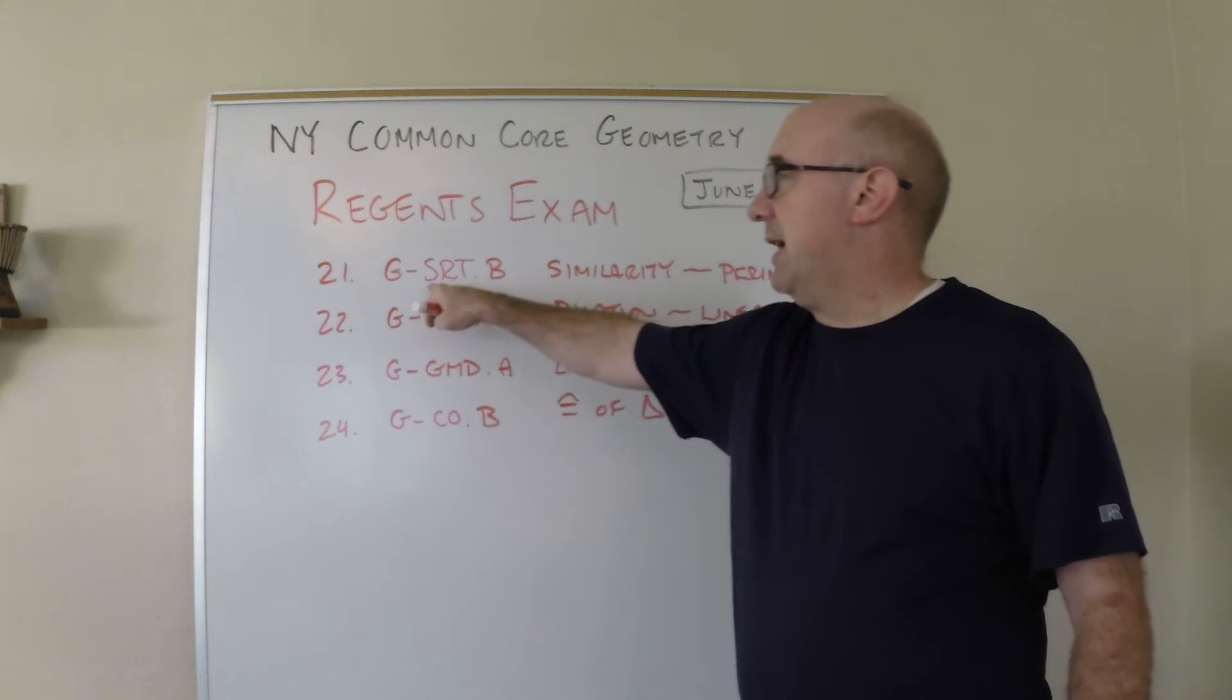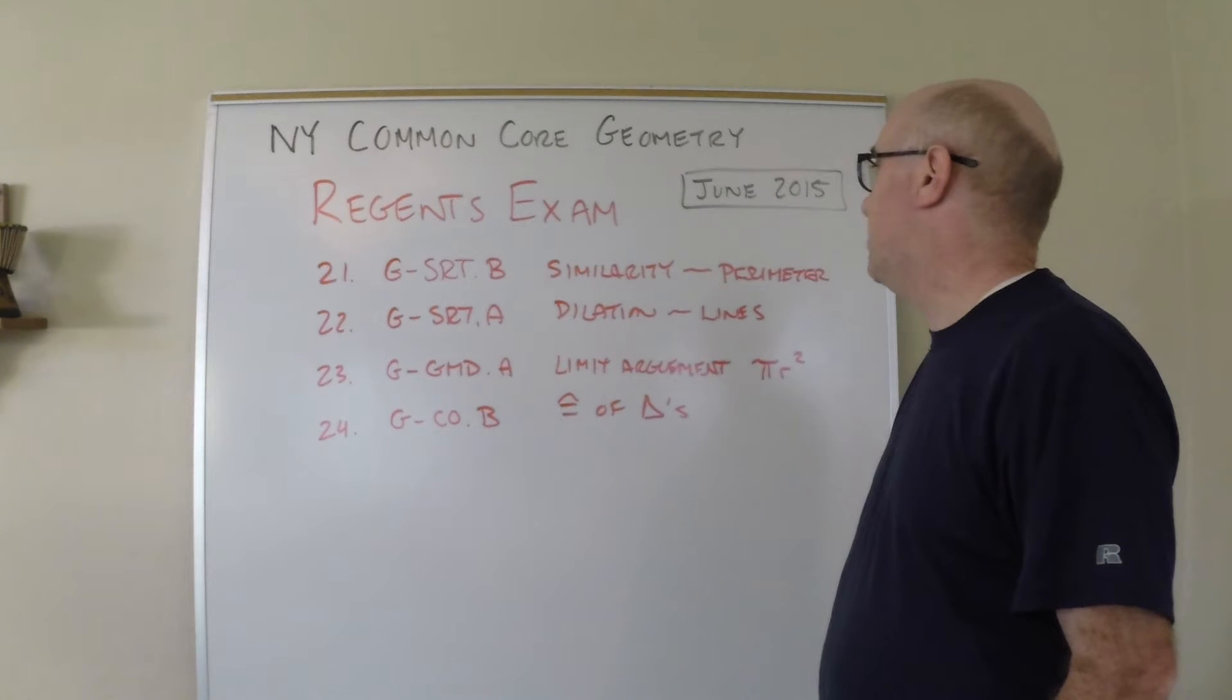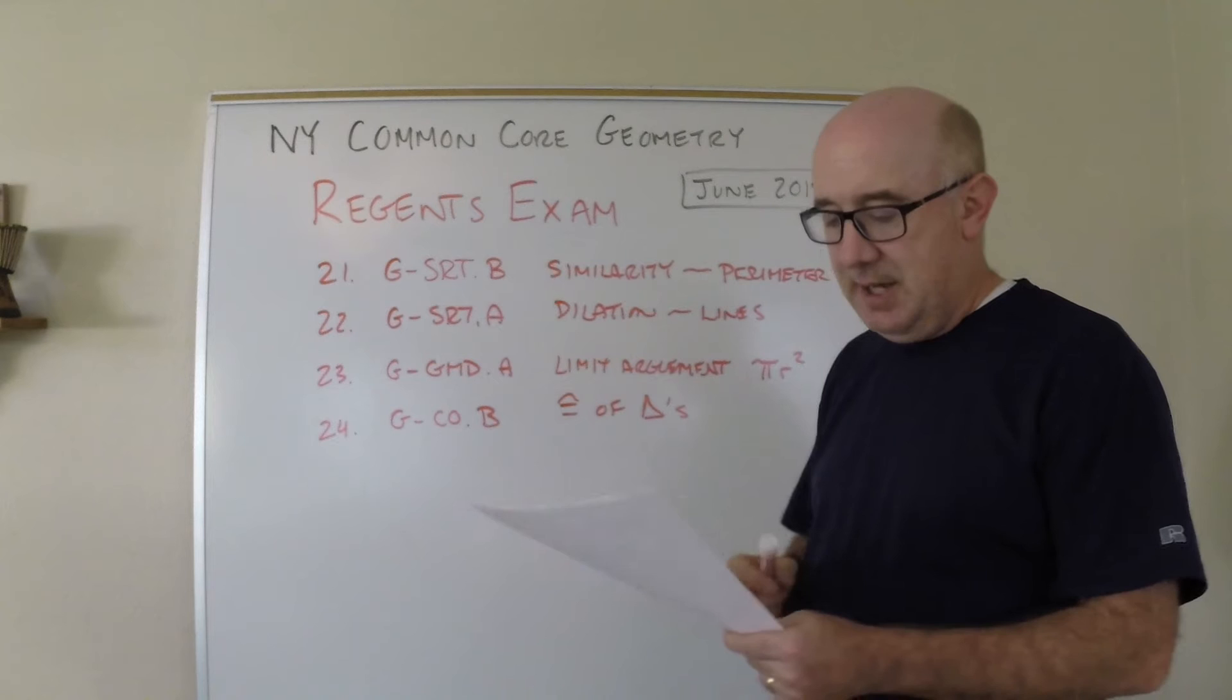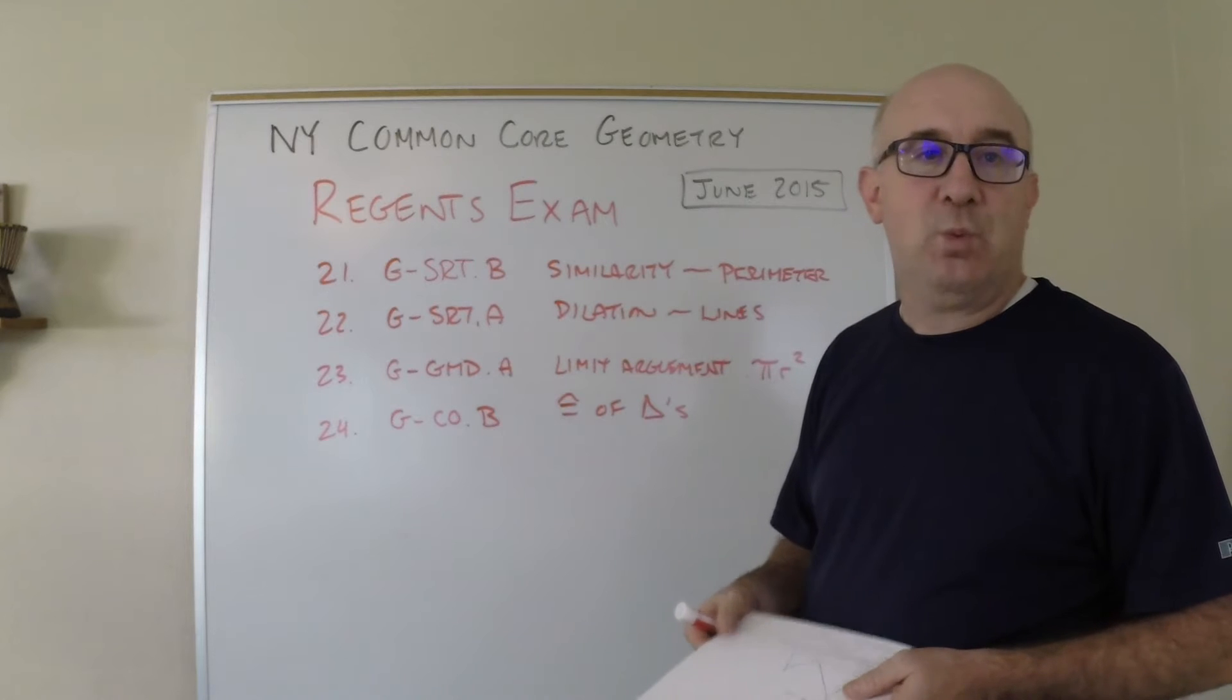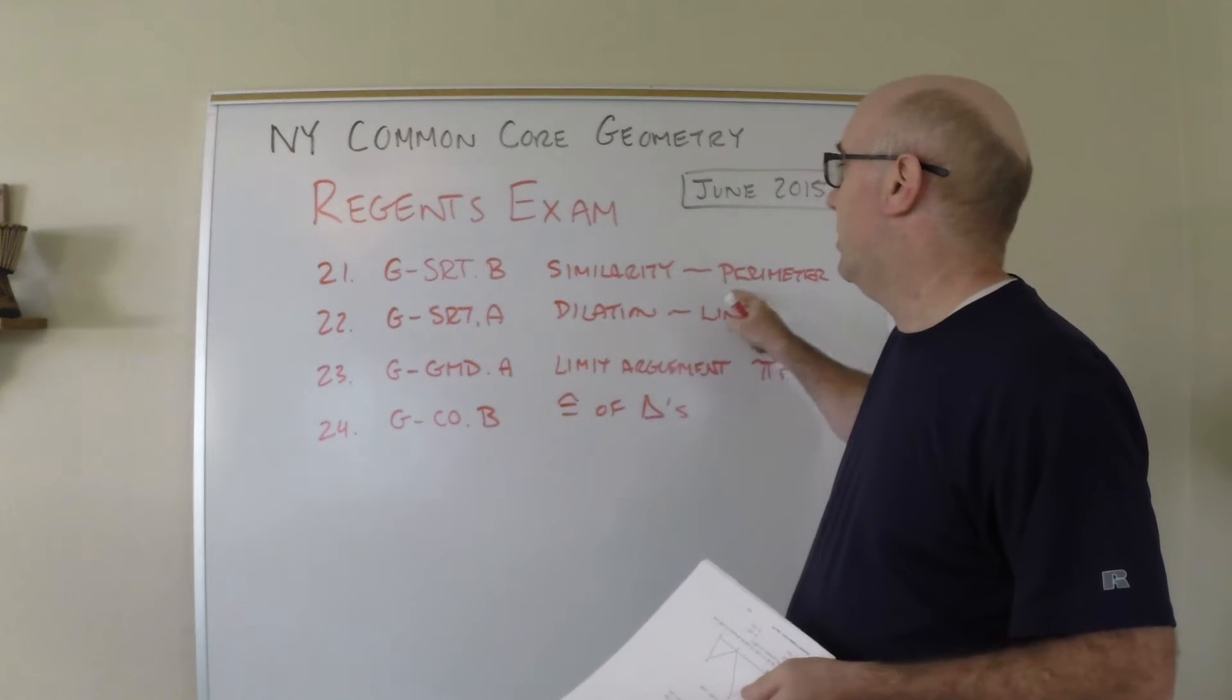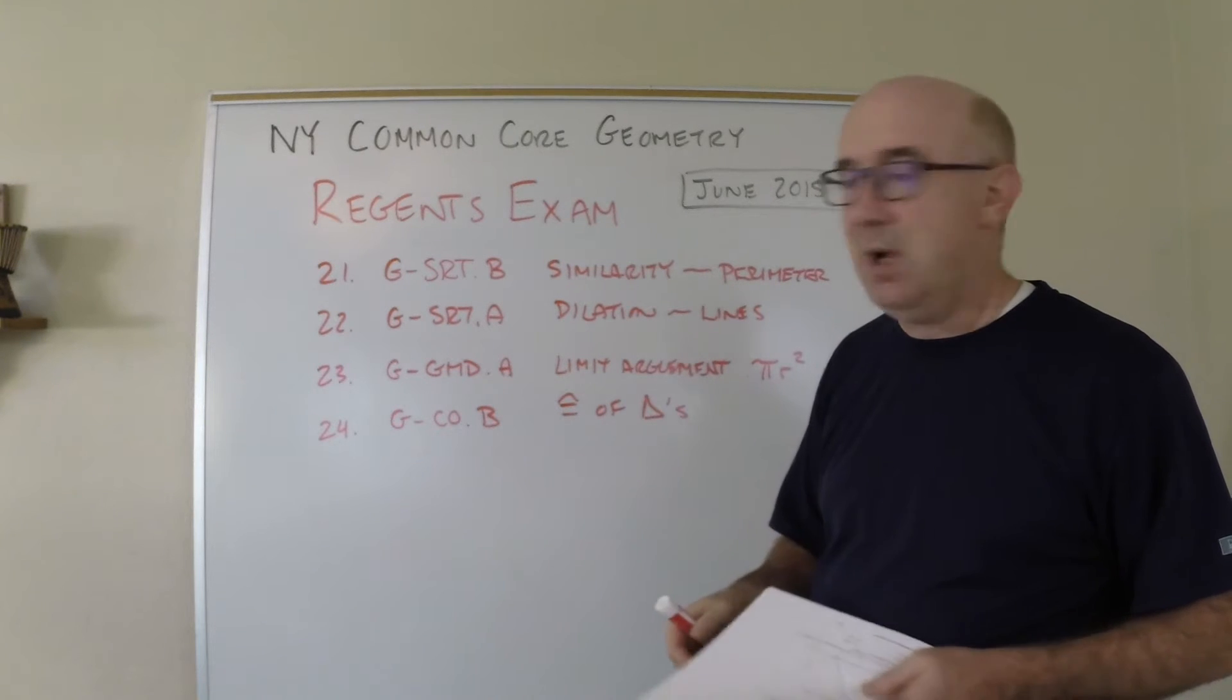Question 21 is in the special right triangle category Cluster B, which is where it begins to move from dilation properties into similarity. This is definitely a similarity question. It's a triangle where they give you some pieces and parts and ask you to work with the knowledge that sides are proportional. We're dealing with the fact that perimeters are proportional as well.